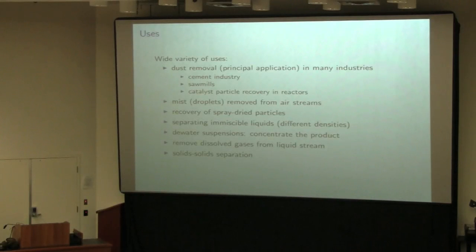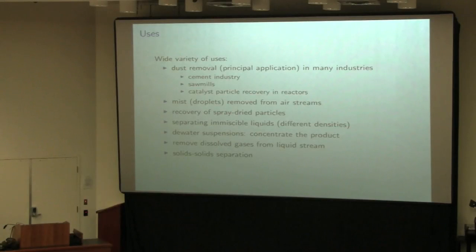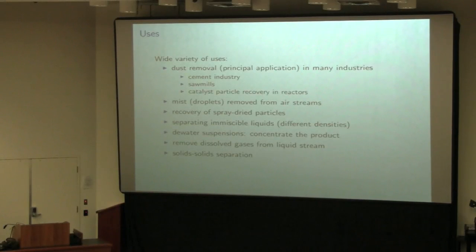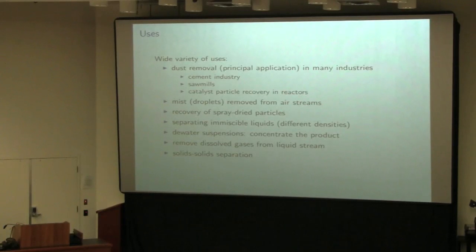Cyclones are widely used in many industries — whether it's dust removal, sawmills, or catalyst particle removal. If you've got a reactor involving catalyst particles in a fluidized bed, one way to recover those particles is through the cyclone. They're also used to remove droplets from an air stream — oil droplets or liquid droplets. For spray-dried particles, such as powdered milk or pharmaceutical powders, cyclones are common for recovering those small particles out of the air stream.